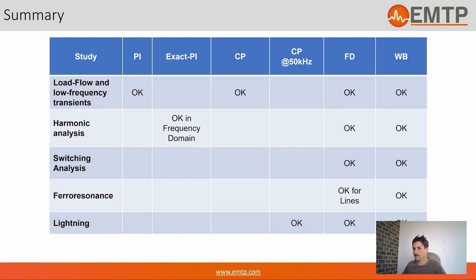The frequency dependent model, acronym FD, is used for overhead lines only. It also reproduces traveling waves but in a larger frequency band, valid from the fundamental frequency up to the lightning region. However, it's valid only for balanced overhead lines, not cables, and it doesn't behave well when simulating largely unbalanced phenomena.